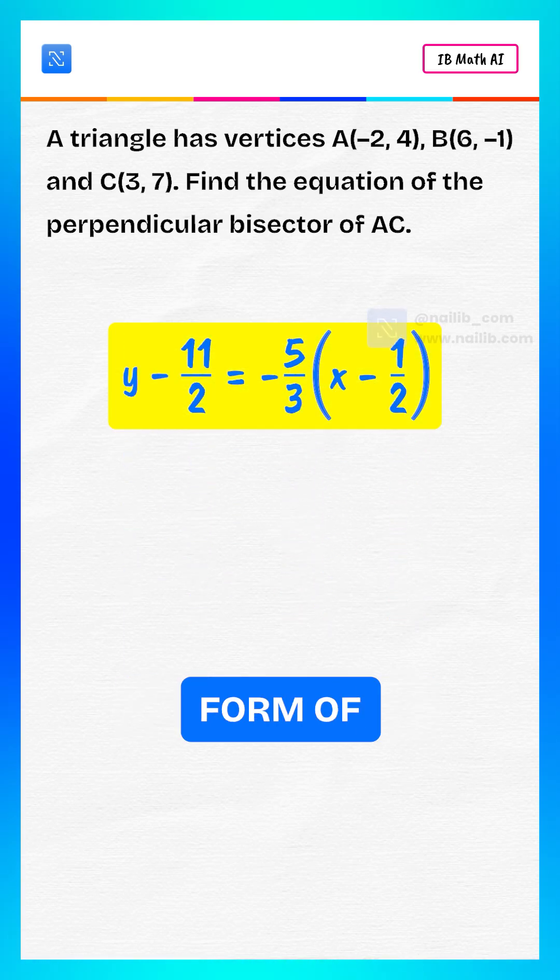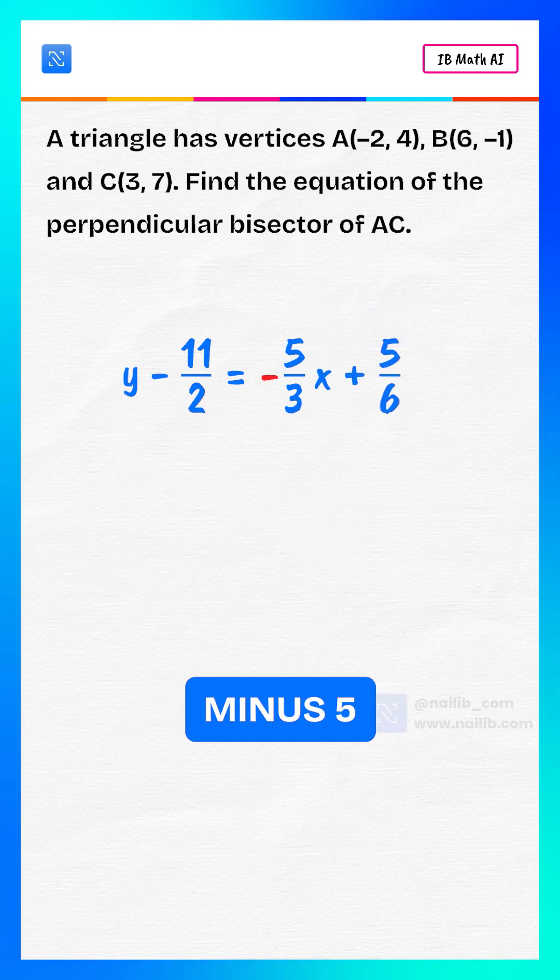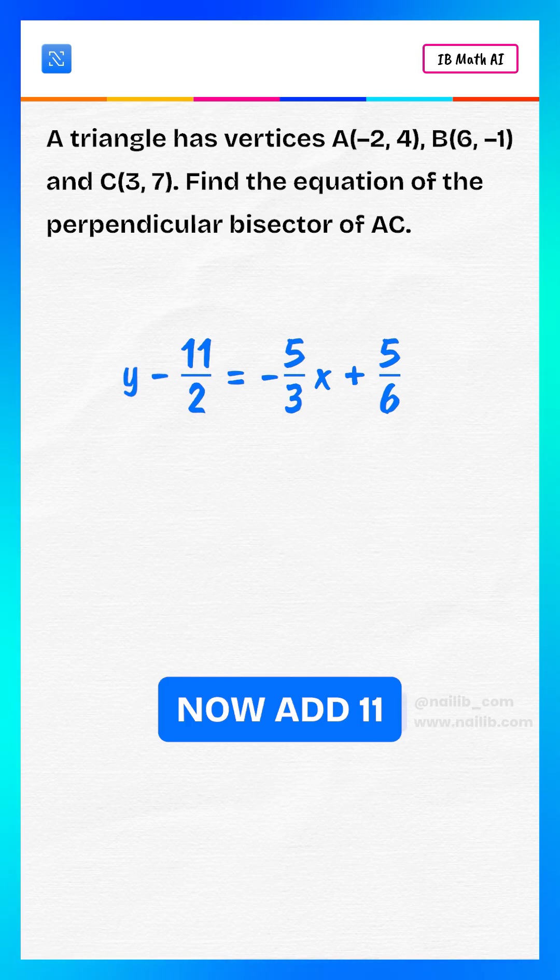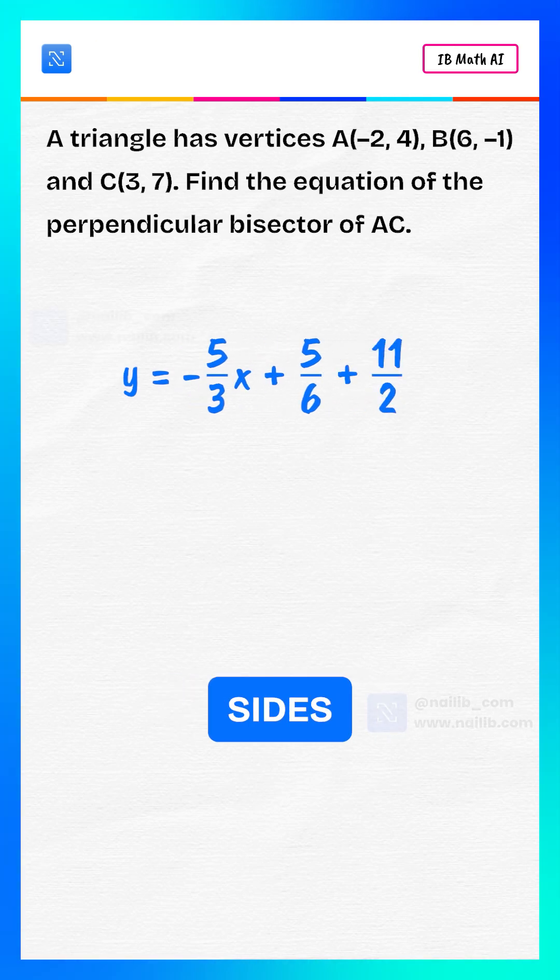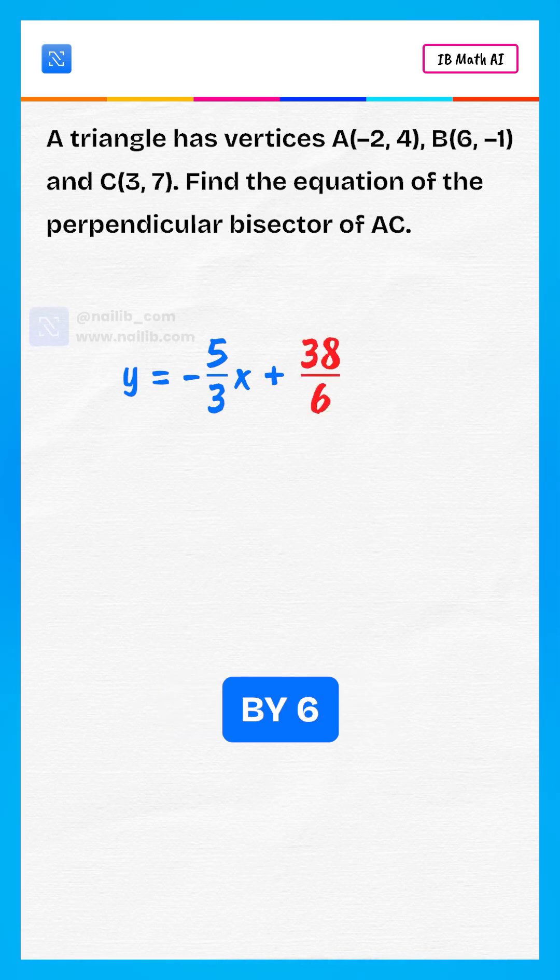This is the algebraic form of the perpendicular bisector. Right side becomes -5/3 × x + 5/6. Now add 11/2 to both sides. Add the fractions gives us 38/6 which simplifies to 19/3.